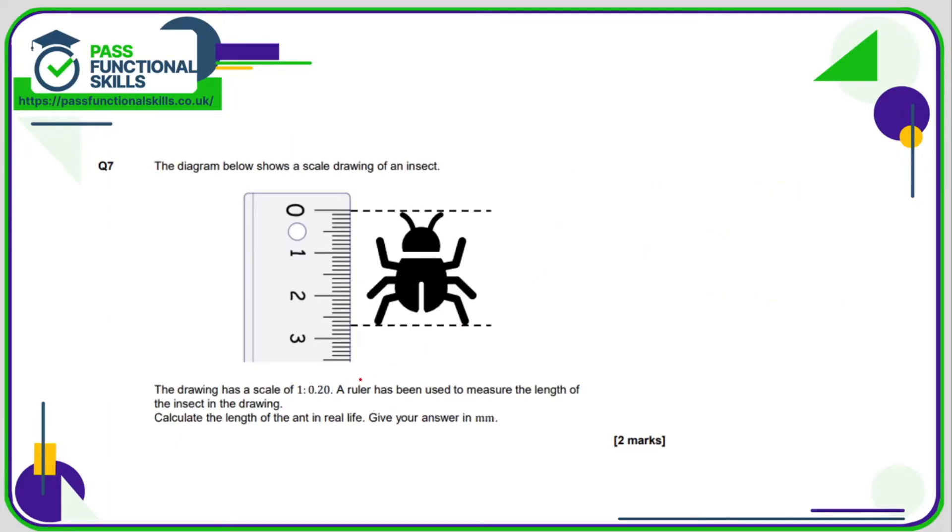Question number 7, we've been told that the drawing has a scale of 1 to 0.20. We don't really need that 0 on the end. So 1, what that means is 1 centimeter on the picture represents 0.2 centimeters in real life. Or 1 millimeter on the picture represents 0.2 millimeters in real life. Now the measurement of the picture of the ant is 2.7.